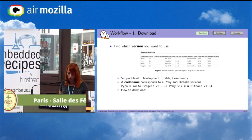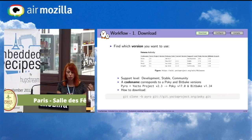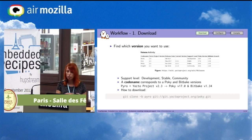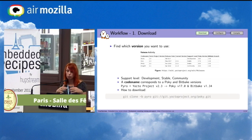To download it, you use git clone and check out the branch that corresponds to the codename. In every layer you will have the same branch that corresponds to the codename, so you will have all you need and everything will work together.